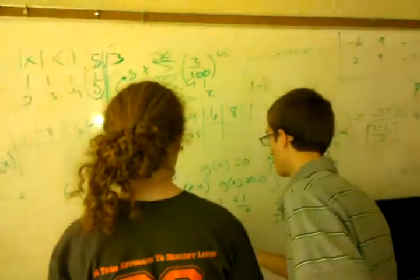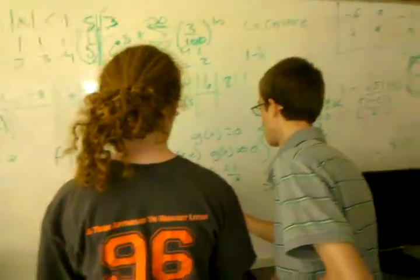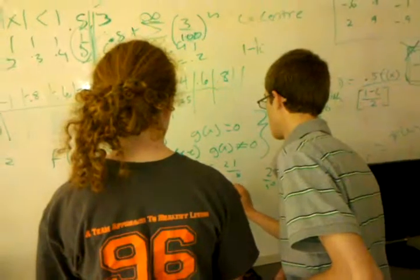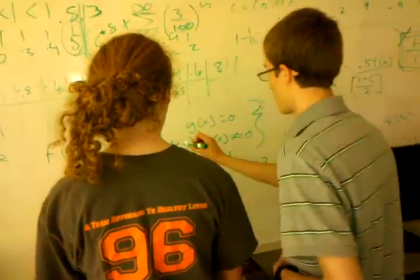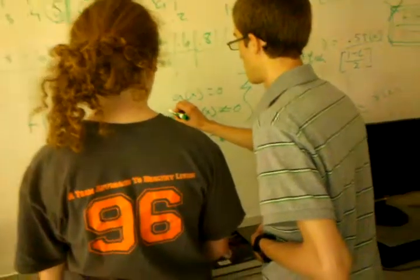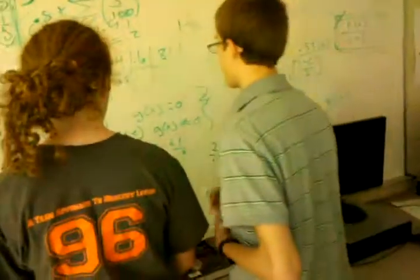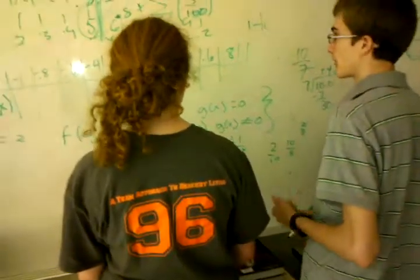All right, so then if we do negative 0.4, we do negative 0.4 minus, so it's negative, that's going to be 0.6. No. Over. Okay, so we're going to have to do. It's going to have to be a triple pizza special.